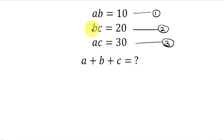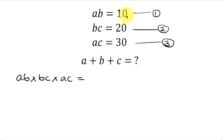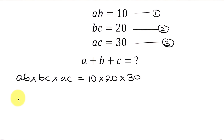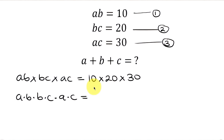Our first step will be to multiply the three equations together. On the left-hand side we have ab times bc times ac, and this is equal to the right-hand side: 10 times 20 times 30. This expression on the left is the same as a times b times b times c times a times c, and this is equal to 10 times 20 times 30, which gives 6000.